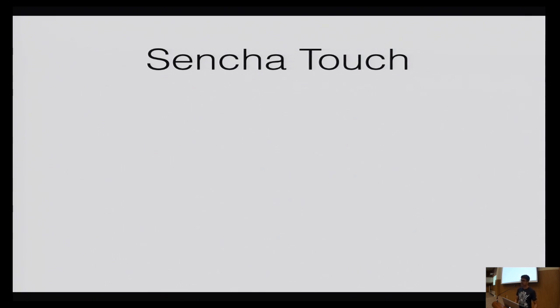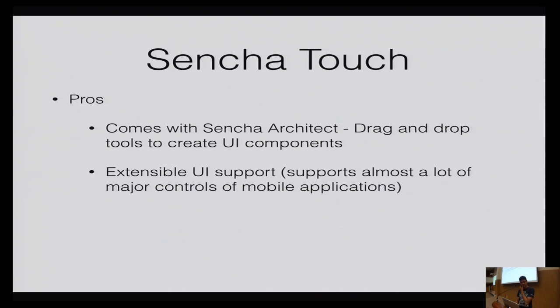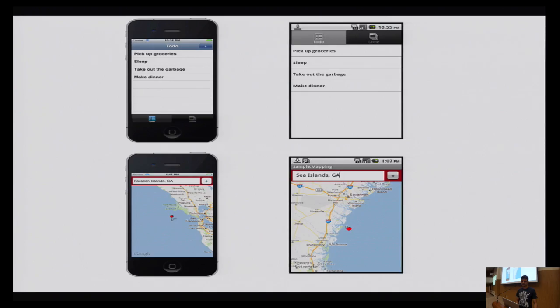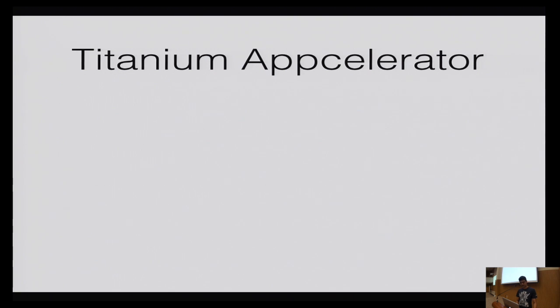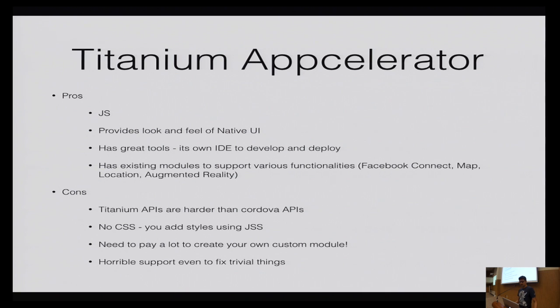Sencha Touch and jQuery Mobile are not really meant for hybrid applications — you need to use something like WebView or Cordova with them. Sencha just provides the UI layer, same with jQuery Mobile. One thing I forgot to mention about Titanium: the basic modules work out of the box, but if you want to create your own module, you need to buy their license, which is expensive — around $10,000 for decent support.